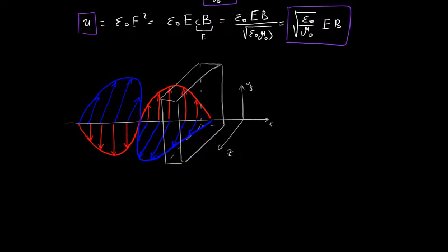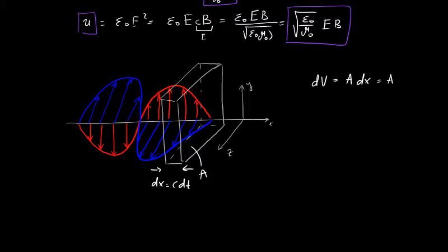Imagine the wave is passing through an area A perpendicular to the x-axis. In a short time dt, the wave passes a distance dx equals c·dt. The energy that passes through area A in time dt occupies a volume dV equals A·dx equals Ac·dt.